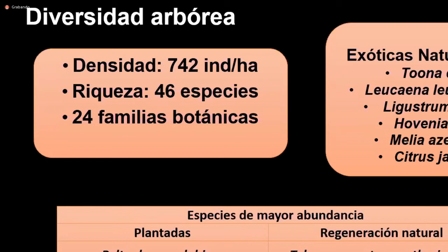En función a los resultados, el sitio presenta una estructura con una densidad de 742 individuos por hectárea y una riqueza arbórea de 46 especies clasificadas en 24 familias botánicas. De estas, 6 son las especies plantadas y el resto provienen de la regeneración natural. Dentro de esta riqueza también aparecieron especies exóticas como la leucaena, el ligustrum, la melia y el citrus, consideradas exóticas naturalizadas. Las especies plantadas con mayor abundancia fueron Peltophorum dubium (caña fístola) y Astronium balansae (urunday).